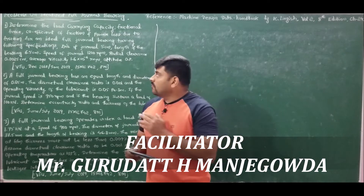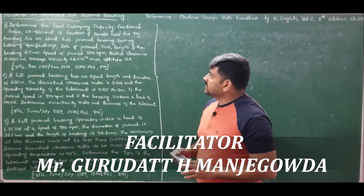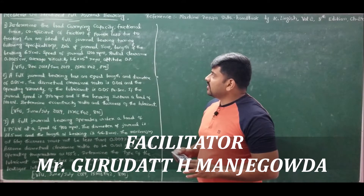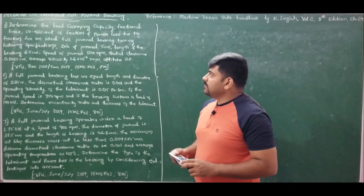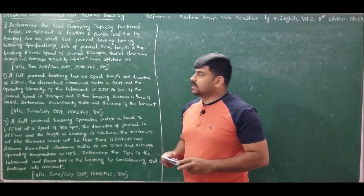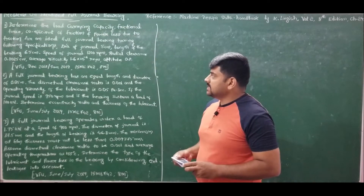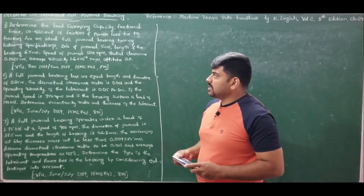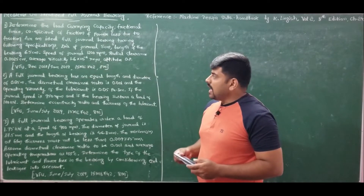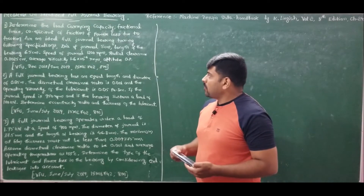Problem number one states: determine the load carrying capacity, frictional force, coefficient of friction, and power loss due to friction for an ideal full journal bearing with the following specifications. Diameter of journal: 5 cm, length of bearing: 6.5 cm, speed of journal: 1200 rpm, radial clearance: 0.0025 cm, average viscosity: 1.6 × 10⁻⁶ Reynolds, attitude: 0.8.